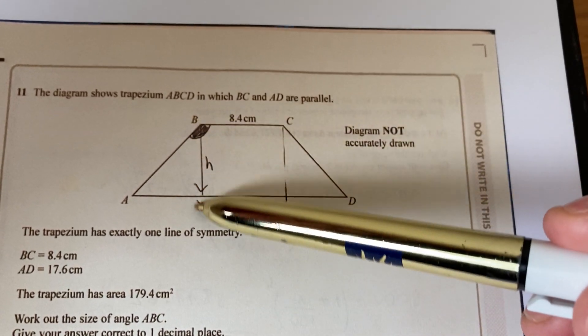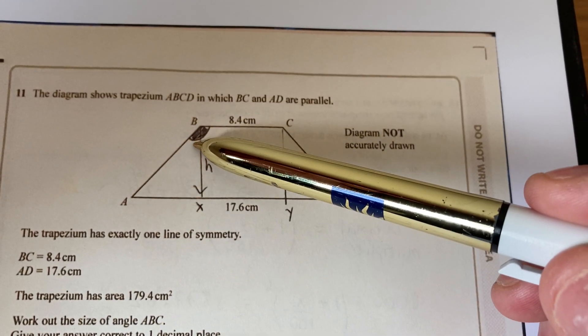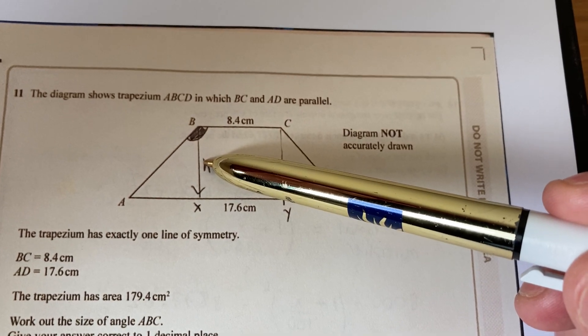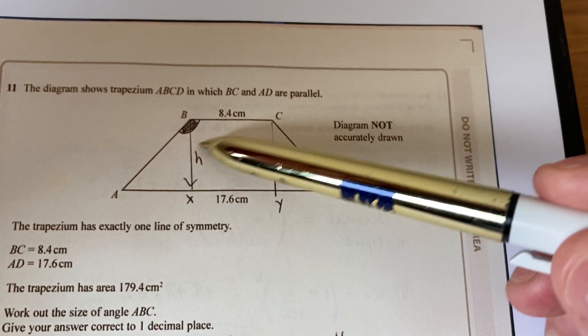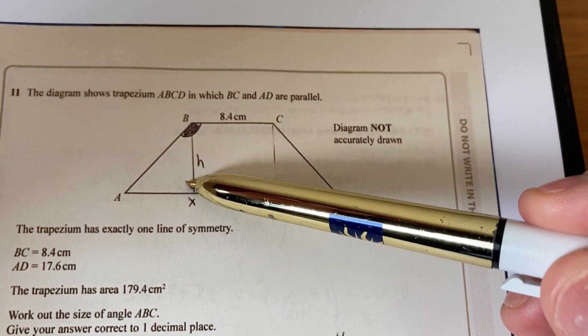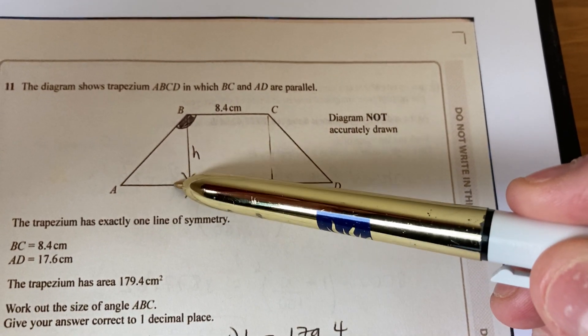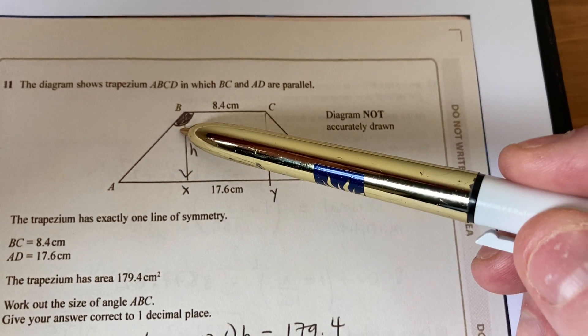Looking at this right angle triangle here I can find this angle in there because I've just found the height and I know what this length is over here. If I know the two lengths and I've got a right angle triangle I can be using SOHCAHTOA to find this angle up here.